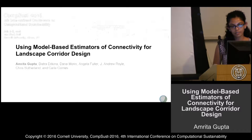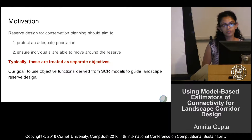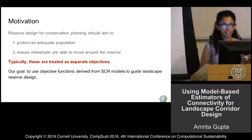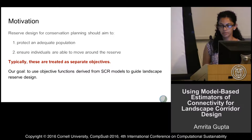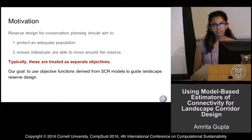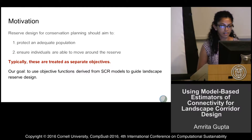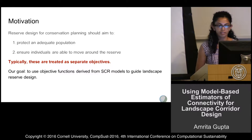We're working on the reserve site selection problem, guided by two main ideas: in order to successfully conserve a population, we want to first conserve an adequate number of individuals, and secondly ensure that those individuals can traverse the landscape we're conserving in order to disperse, to forage, and to find breeding opportunities.